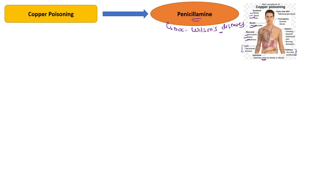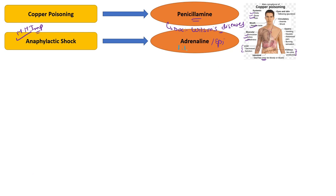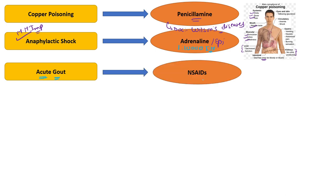The drug of choice for copper poisoning is penicillamine. For anaphylactic shock — this is the most important for exams — the drug of choice is adrenaline, also called epinephrine. We give epinephrine in a ratio of 1:10,000 by intramuscular route to the patient in anaphylactic shock.